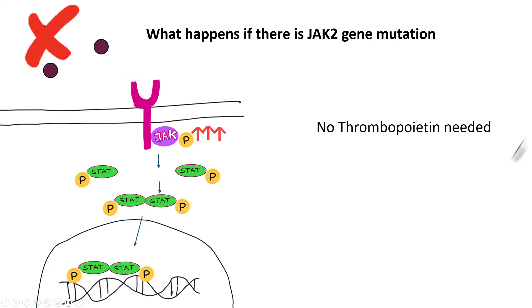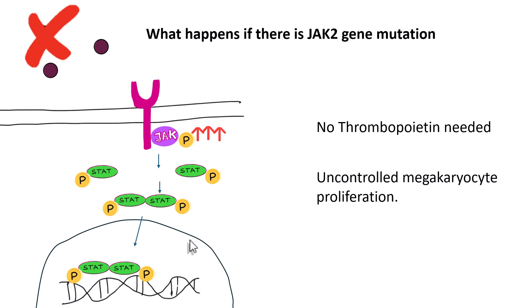No thrombopoietin is needed, yet there is uninhibited cellular proliferation. The same applies with MPL mutation as well as CALR mutation — all three are involved in the JAK-STAT pathway. Mutations in any of these increase JAK-STAT signaling, leading to uncontrolled proliferation of megakaryocytes. This is what happens in essential thrombocytemia.